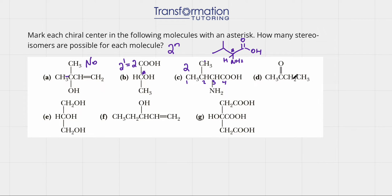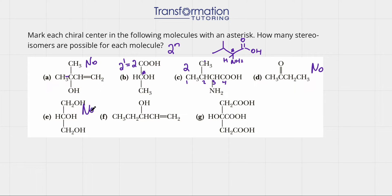In molecule D, there are no chiral centers: one carbon has three hydrogens, another is on a double bond, and others have two or three hydrogens — carbons with two or three hydrogens can never have four different groups. For the next molecule, the central carbon has OH and hydrogen, but it's also attached to CH2OH and CH2OH — two identical groups — so it's not a chiral center. The remaining carbons each have two hydrogens. So this molecule does not have any chiral centers either.